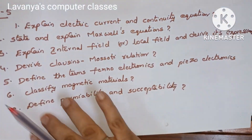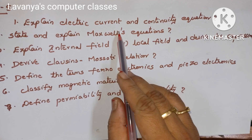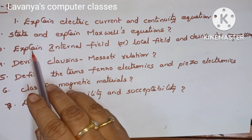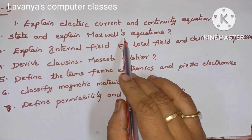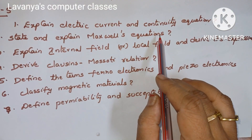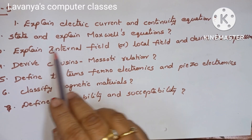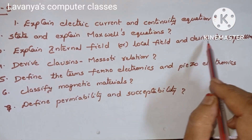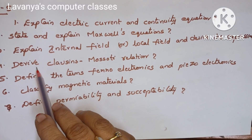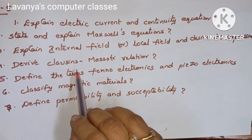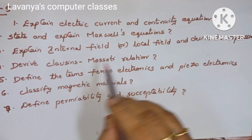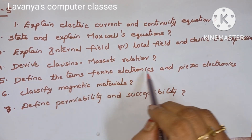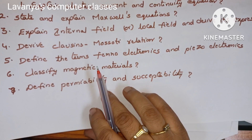Unit 5 questions: Explain electric current and the continuity equation. State and explain Maxwell's equations — important question. Explain internal field or local field and derive its expression. Derive Clausius-Mossotti relation. Define the terms ferroelectrics and piezoelectrics.